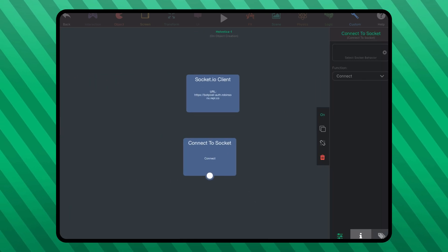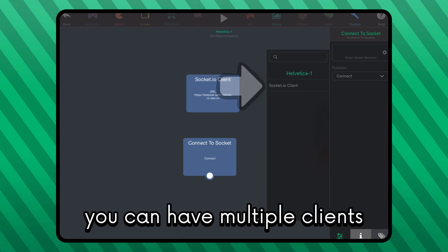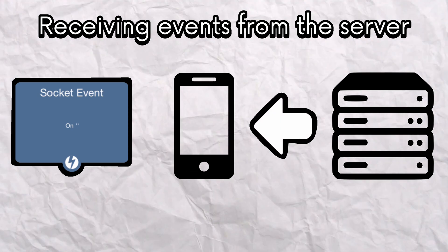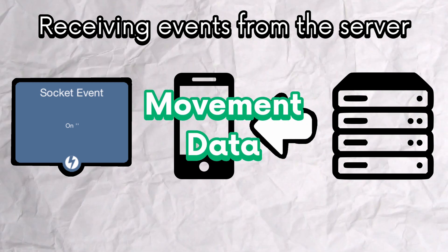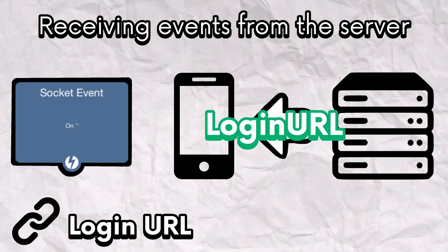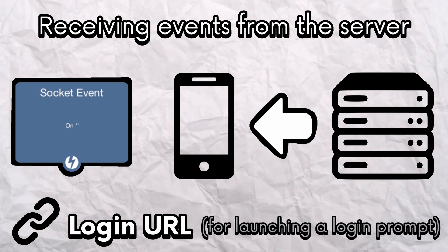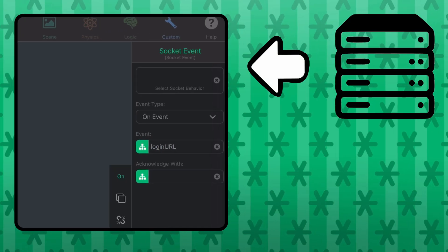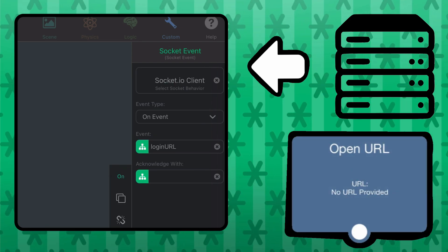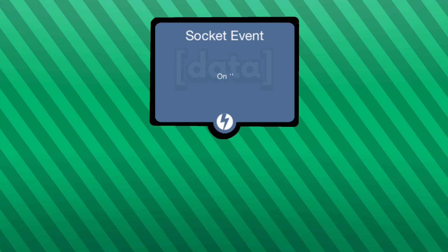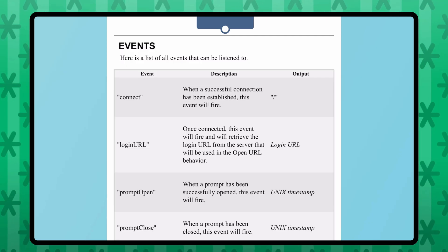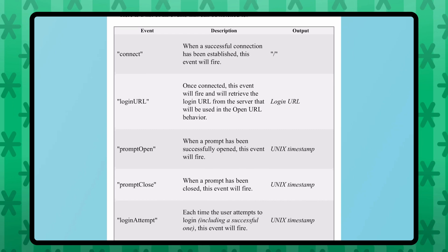In the behavior, make sure that you select the socket client that you want to connect with. You can have multiple clients running at once — it's cool. Before we move on, we need to understand socket events. Socket events are things that the server is sending to you. In a multiplayer game, the server will be sending you movement from other players, but in our case the server will be sending you a URL. This URL will be what you need to open the login prompt. Let's get the socket event behavior and listen for the login URL event. Events come encased in arrays, so we will use the get array value behavior and get the first index of that socket event output.